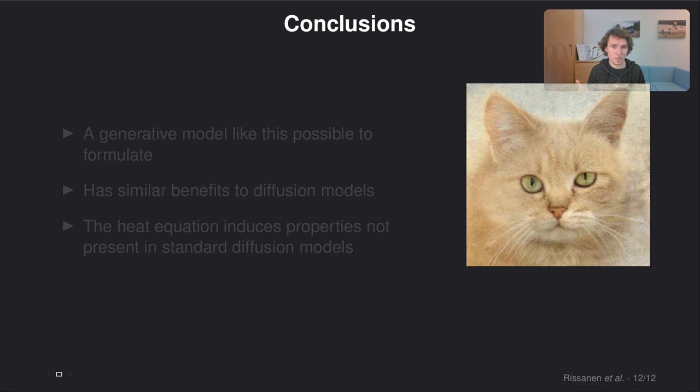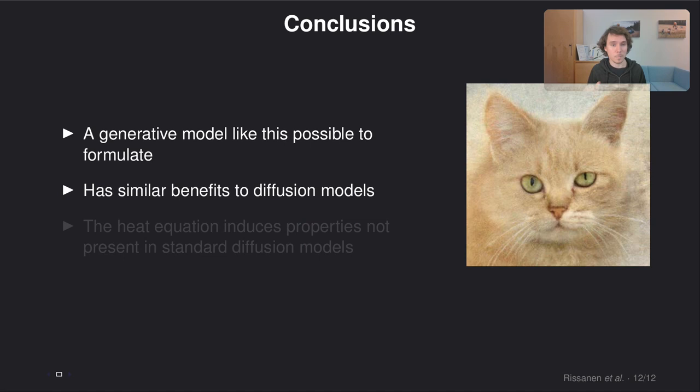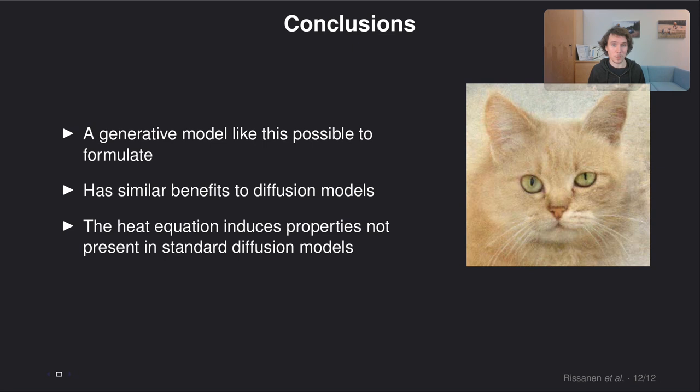So to conclude, a generative model like this is possible to formulate in the first place. The model has some similar benefits to standard diffusion models. For instance, it is very easy to train and the model does induce some interesting properties that are not present in standard diffusion models. And one hope here is that these results can be used to reason about what kinds of other models could work as well and what kinds of properties these models could result in.